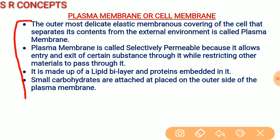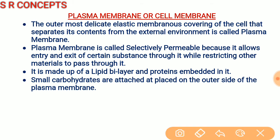The outermost delicate elastic membranous covering of the cell that separates its contents from the external environment is called the plasma membrane. Plasma membrane is called selectively permeable membrane because it allows entry and exit of certain substances through it while restricting other materials. It is made up of a lipid bilayer with proteins embedded in it, and small carbohydrates are attached on the outer side.